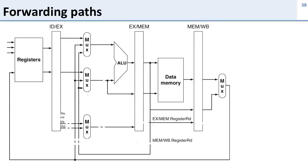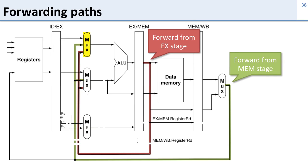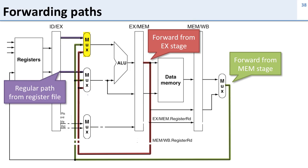Now let's talk about how we actually build this forwarding. We're going to add another MUX to our ALU, which allows us to choose either the forwarding input or the register file input. The first forwarding path forwards data from the EX stage of the previous instruction to the EX stage of the current instruction. We then have a second forwarding path that forwards from the memory stage of two instructions back to the current instruction. In addition to these paths, we keep the regular paths from the register file, and we need control logic to decide which path to choose.